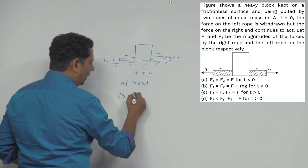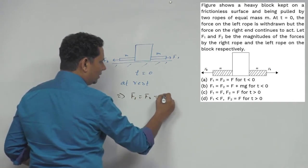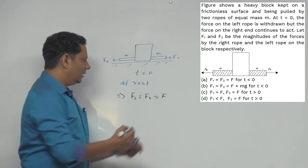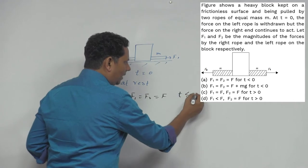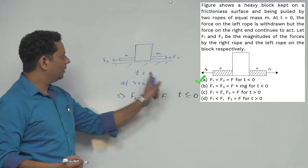Which implies F1 will be equal to F2. Let's call this F for t less than or equal to 0.